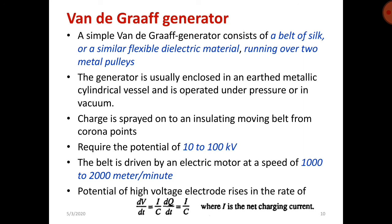A simple Van de Graaff generator consists of a belt of silk or similar flexible dielectric material running over two metal pulleys. The generator is usually enclosed in an earthed metallic cylindrical vessel and is operated under pressure or in vacuum. Charge is spread onto the insulating moving belt from corona points requiring a potential of 10 to 100 kV. The belt is driven by an electric motor at a speed of 1000 to 2000 meters per minute. The potential of the high voltage electrode rises at a rate of dV/dt = I/C, where I is the charging current.